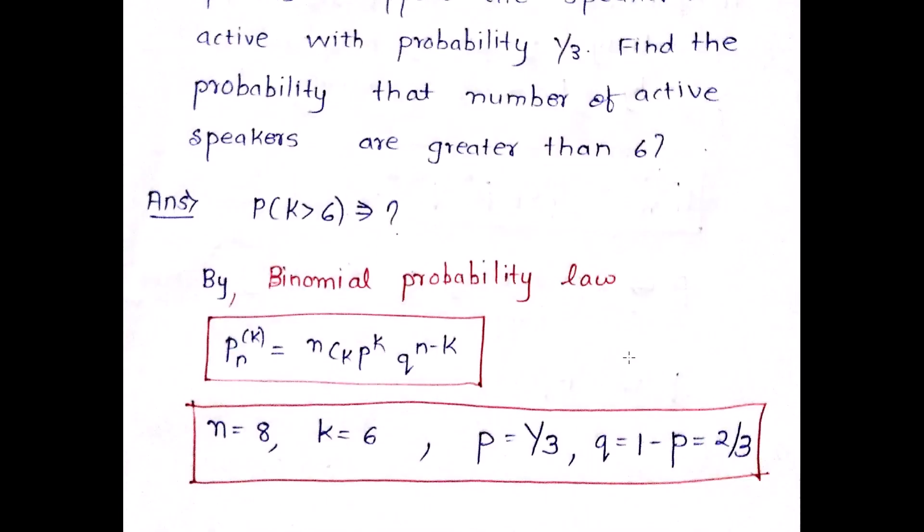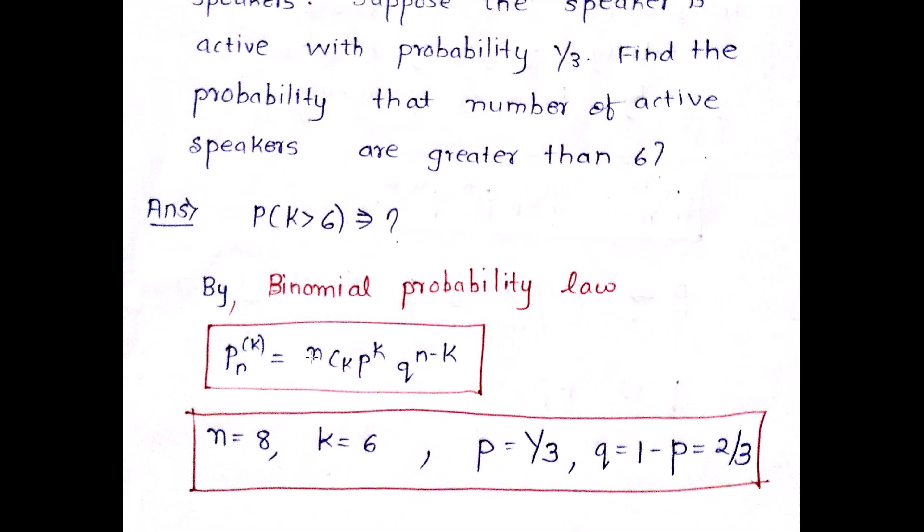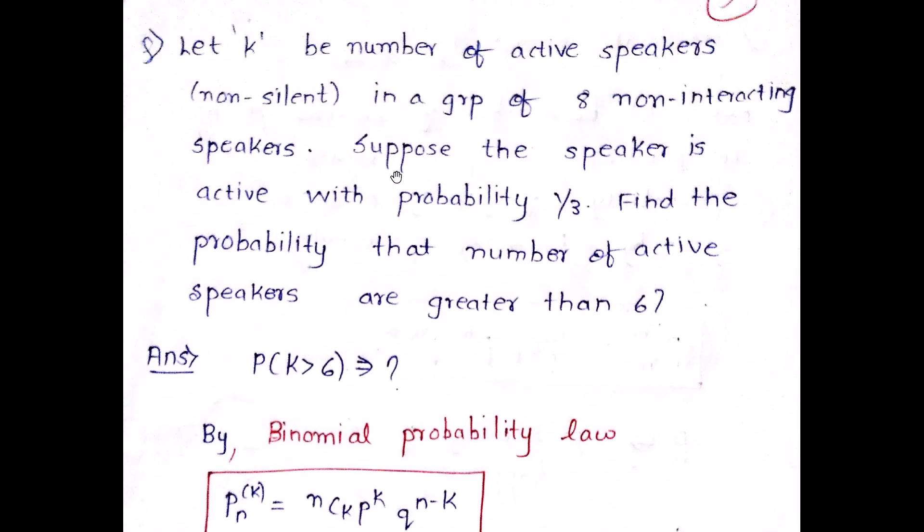So what you have to find out is in a group of eight non-interacting speakers, what is the probability that the number of active speakers are going to be greater than 6. So the formula says, as you know, nCk, p raised to k and q raised to n minus k.